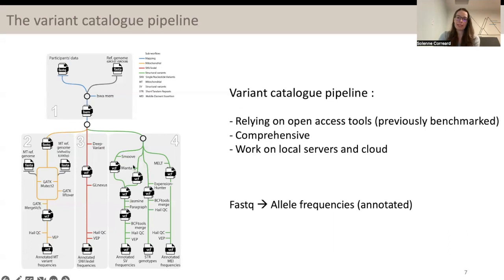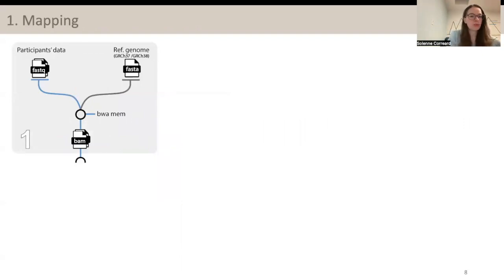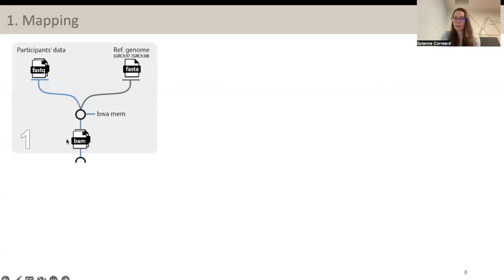The pipeline is divided into four subworkflows that can work independently, or all of them can be run in parallel, or at least in the same pipeline. The first subworkflow is the mapping subworkflow. It takes as input short-read paired-end sequences for individuals as well as a reference genome. It has been developed so far for GRCh37 and GRCh38. The mapping tool is BWA-MEM, and it outputs one BAM file per individual.